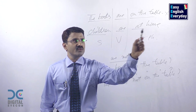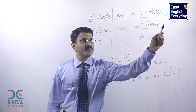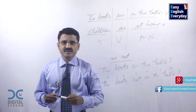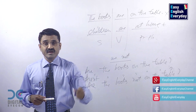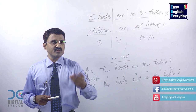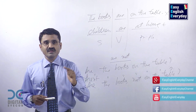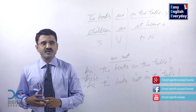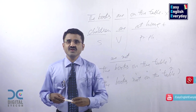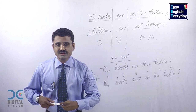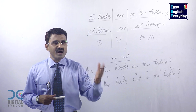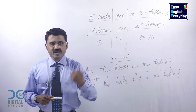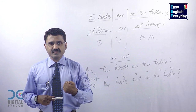Children are at home — positive form. If children are at home, we use this sentence. If they are not at home, naturally we say: Children are not at home — that is the negative form. Children are at home. Children are not at home. Are children at home? — I want to confirm.